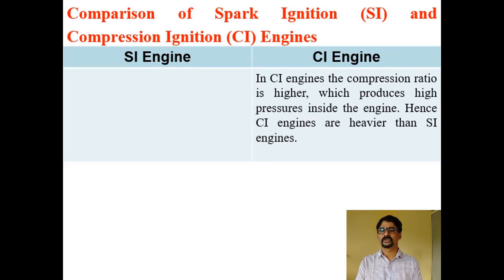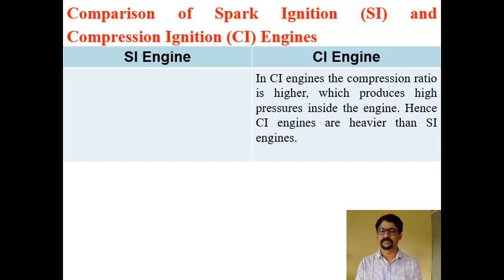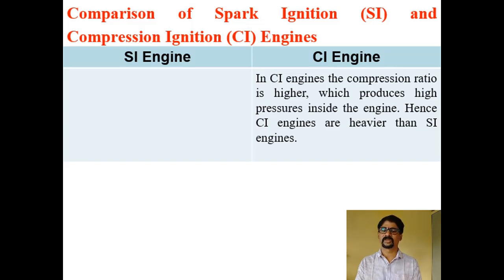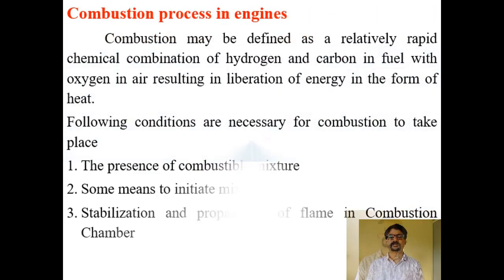In CI engines, the higher compression ratio produces high pressure inside the engine, making CI engines heavier than SI engines. This is because the cylinder, cylinder head, and other parts must be more robust to withstand the high pressure, requiring heavier and thicker materials.